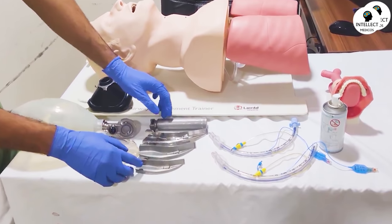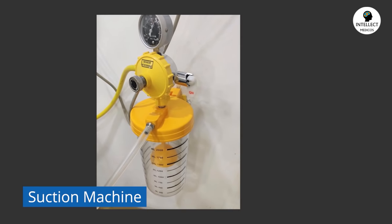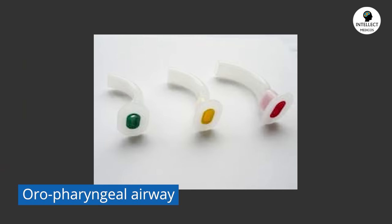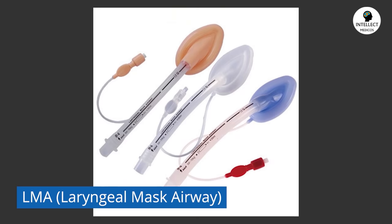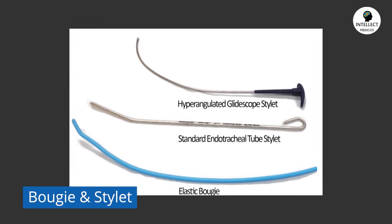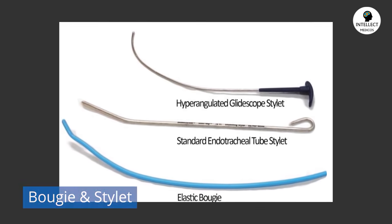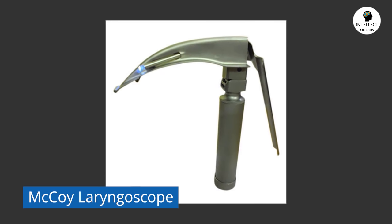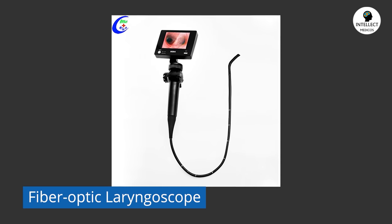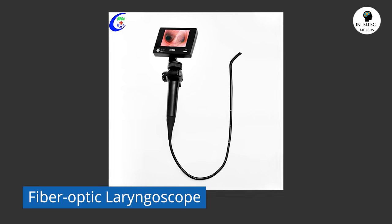You also need a properly functioning suction machine and suction catheter. If you suspect a difficult airway, prepare a difficult airway cart. This includes different sizes of oropharyngeal airway, nasopharyngeal airway, LMA (laryngeal mask airway), a bougie, a stilette, a McCoy laryngoscope, and if available, a video laryngoscope and fiber optic scope. These topics will be covered in the next video on difficult airways.